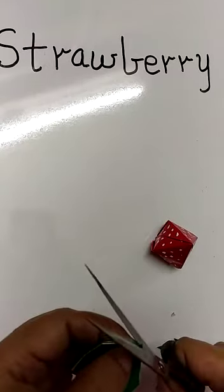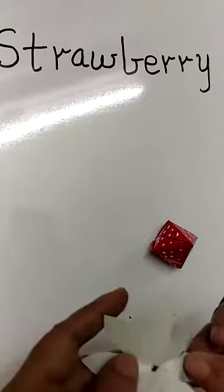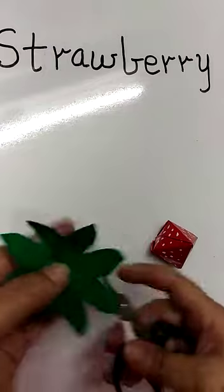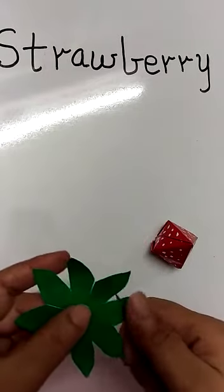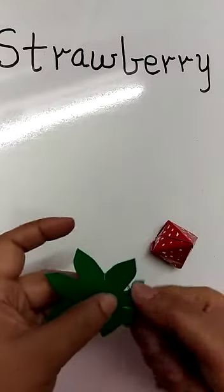And at the center, you make a tiny hole. Now you twist this paper. Take your scissors and twist it like this.